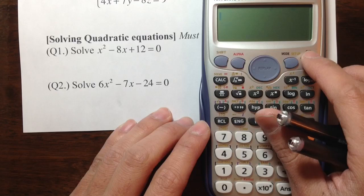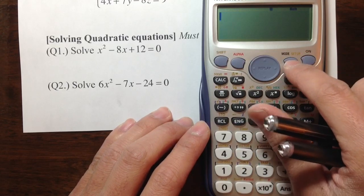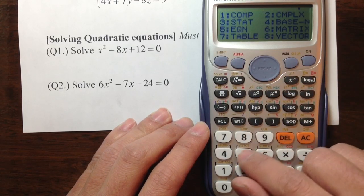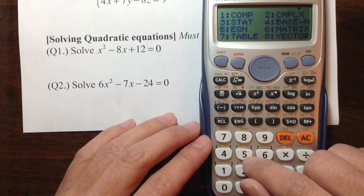Again, we're going to use a calculator. Turn on the calculator, and the best place to go is the mode. We're trying to do something with the equation, so that's number 5.